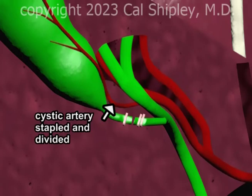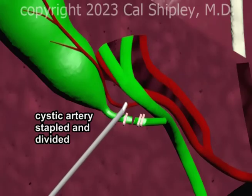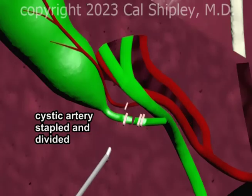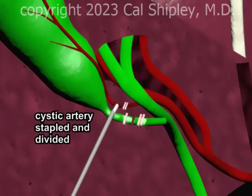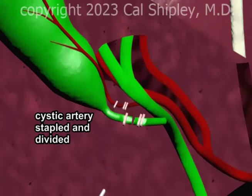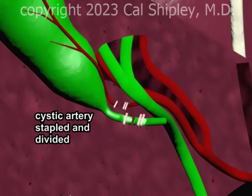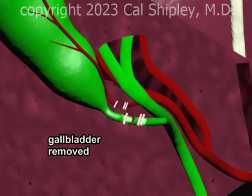The same technique is then applied to the cystic artery. The gallbladder is now free of its attachments and may be removed.